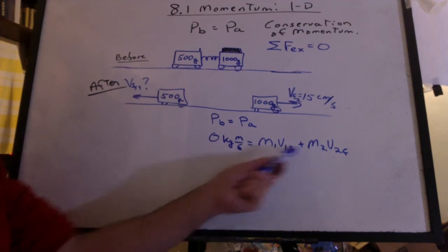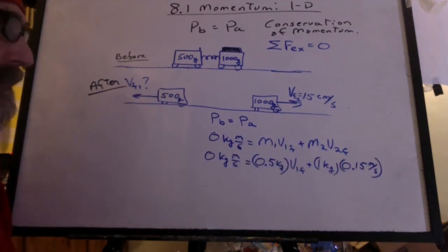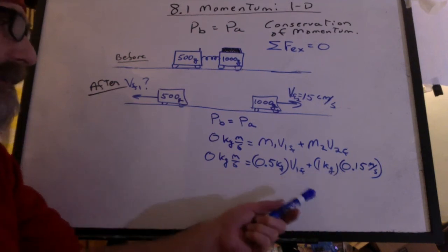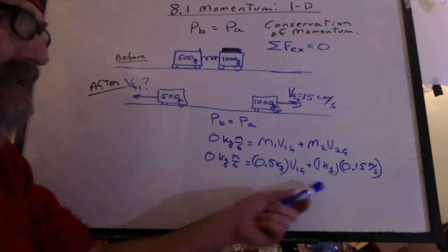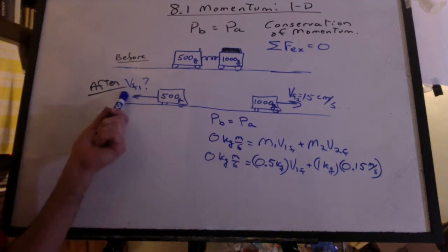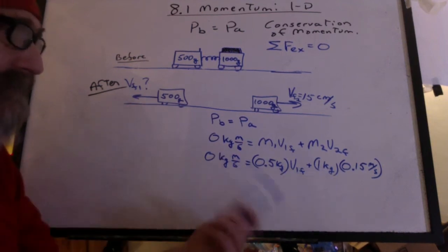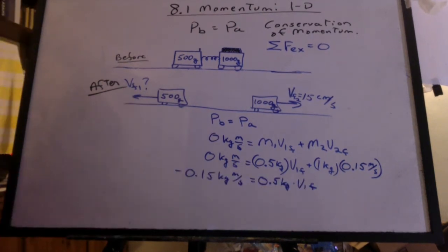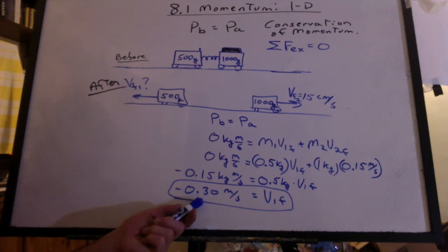Here's the formula for the momentum of each cart. We don't really have to put everything in kilograms and meters per second. It would all work out if it was grams and centimeters per second because we're looking for a velocity here. But it's probably what most of you are used to. A little algebra. And we get an answer of 30 centimeters per second. Notice there's a negative sign here.